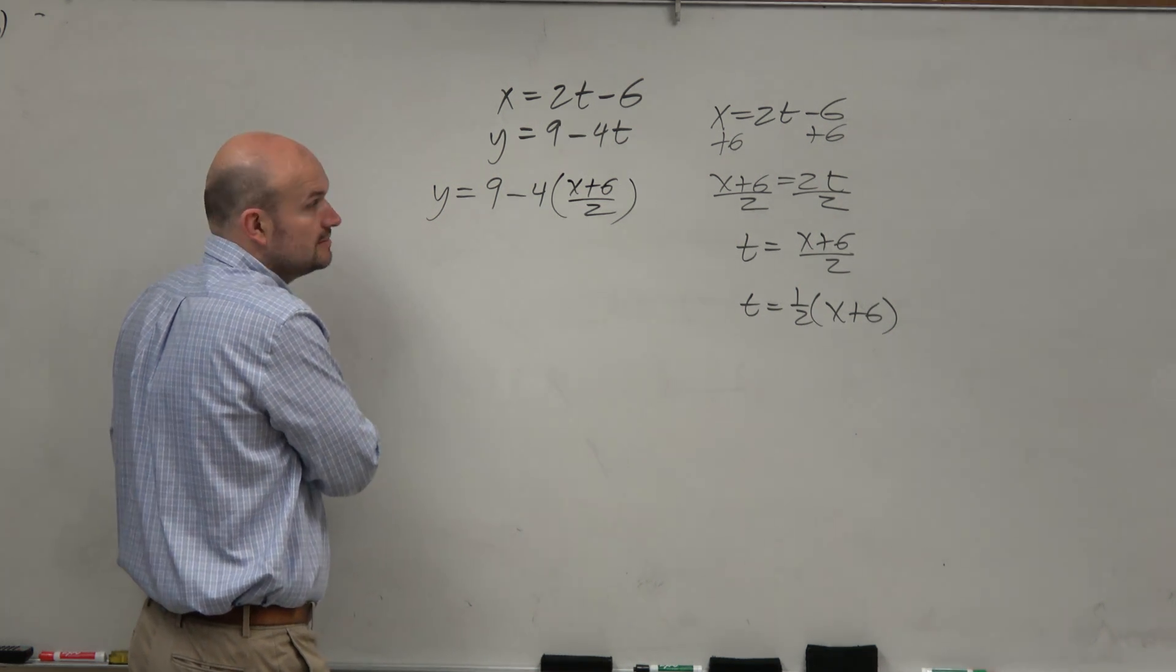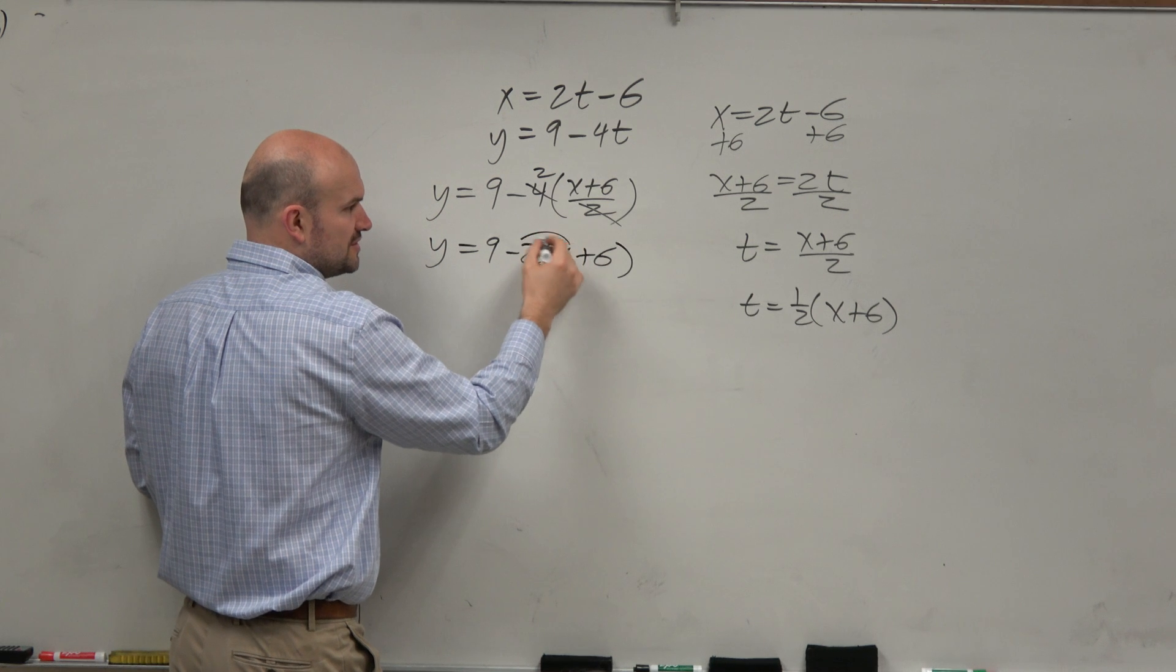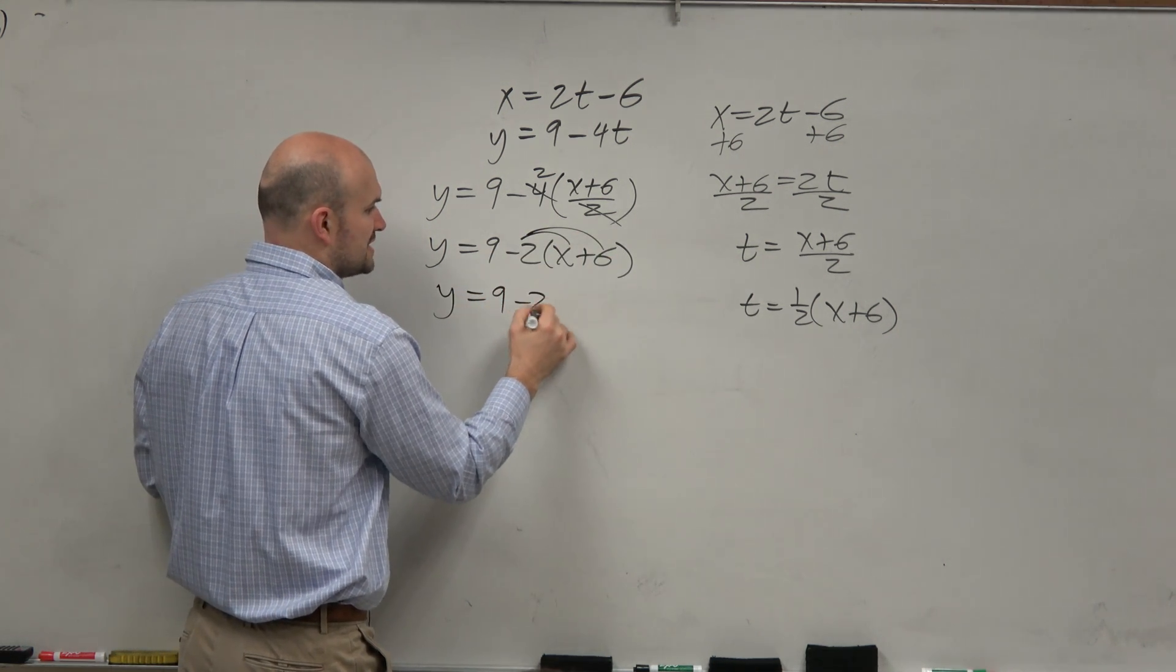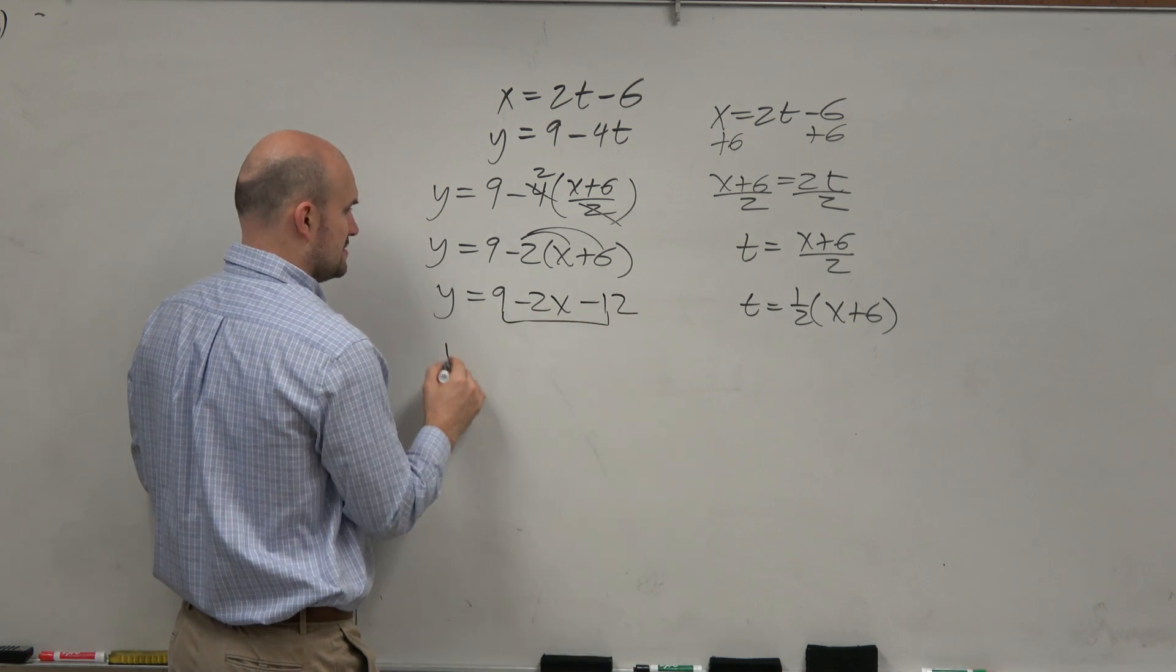Now we just simplify. Well, negative 4 divided by 2 goes to a negative 2. Don't forget the parentheses. You still have to distribute the negative 2. So then I get y equals 9 minus 2x minus 12. Combine like terms. y equals negative 2x minus 3.